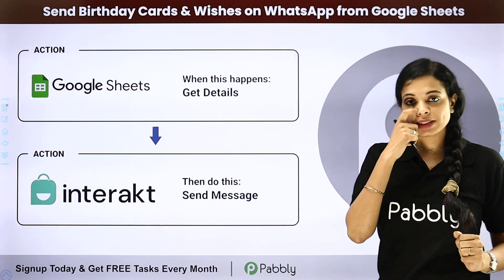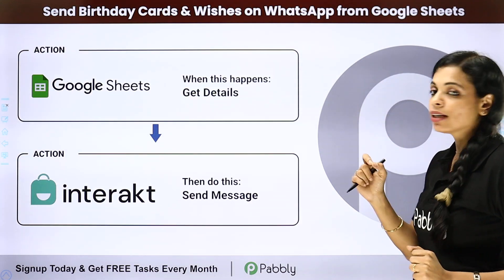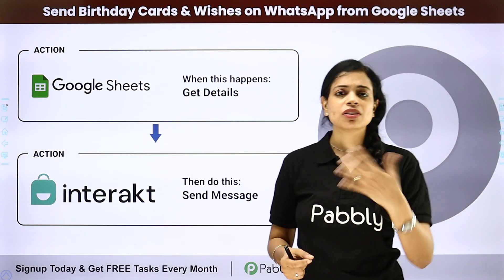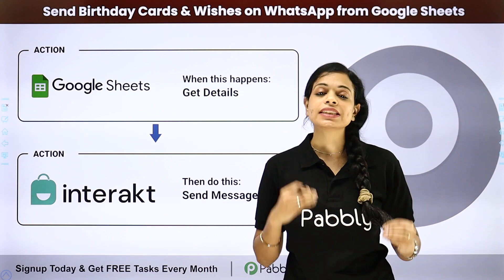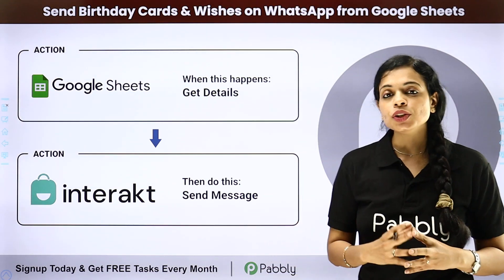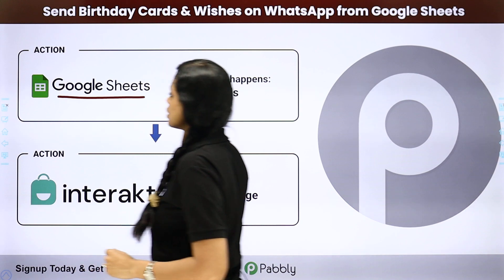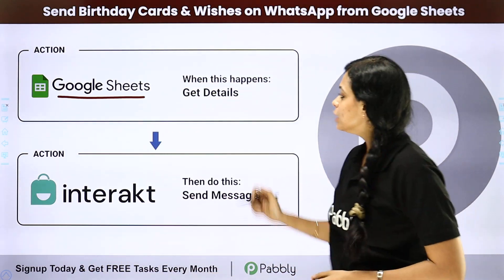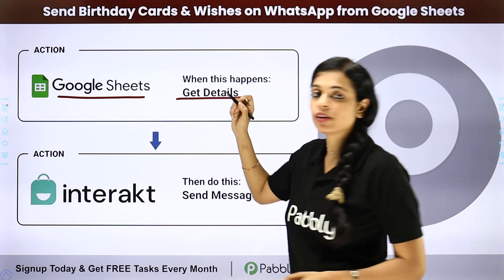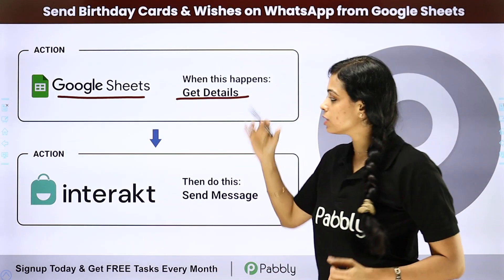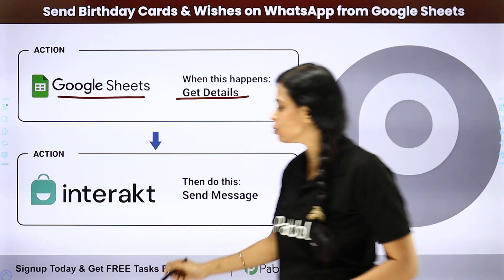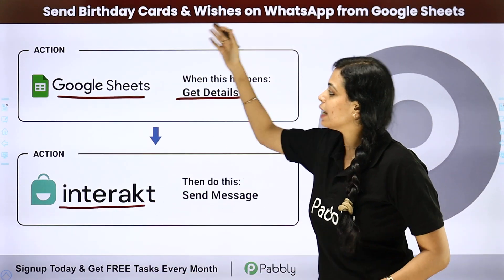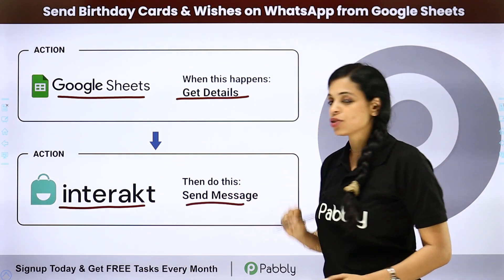The first example is where you want to send birthday cards and wishes on WhatsApp from Google Sheet. Not only birthday cards — you can send Diwali cards, Holi cards, or certain documents. You have the details of your clientele in your spreadsheet, and using Interact, which helps in sending WhatsApp messages, you can send everyone this message in bulk.